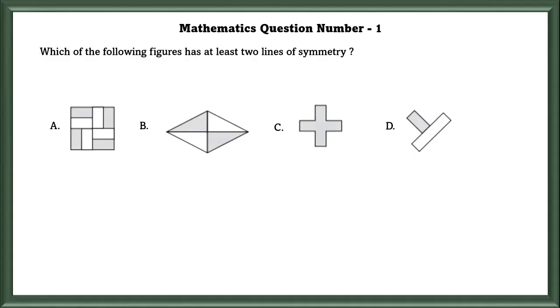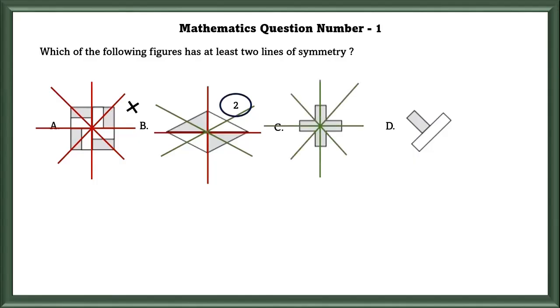In figure A, it is not horizontally, vertically or diagonally symmetrical. In figure B, it is not vertically or horizontally symmetrical but is diagonally symmetrical. In C, it is vertically, horizontally and diagonally symmetrical.